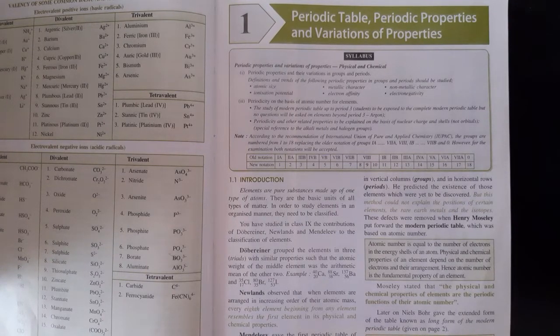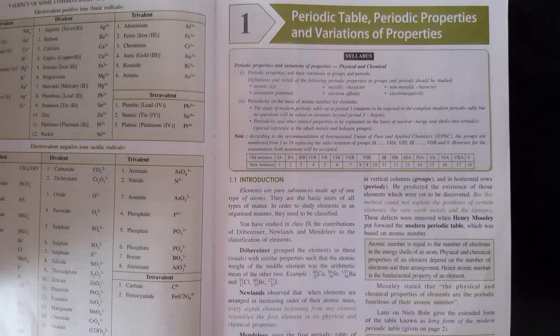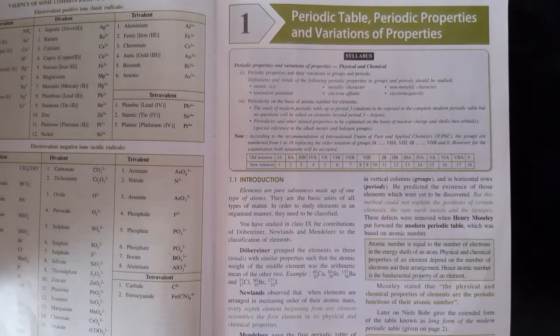Introduction: Elements are pure substances made up of one type of atoms. They are the basic unit of all type of matter. In order to study elements in an organized manner, they need to be classified. You have studied in class 9 the contribution of Dobereiner, Newlands and Mendeleev to the classification of elements.